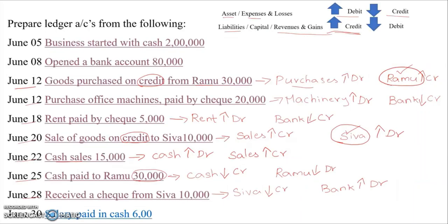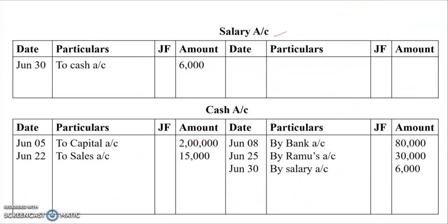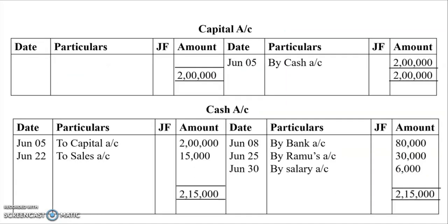The last transaction is June 30 — salary paid in cash, ₹6,000. The two accounts are salary and cash account. Salary is an expense; when we pay it, the expense increases, so we debit salary. Cash is an asset; when payment is made, cash balance reduces, so we credit cash. In salary account (debit side): 'To cash, ₹6,000.' In cash account (credit side): June 30, 'By salary account, ₹6,000.' We have now recorded all transactions for June.